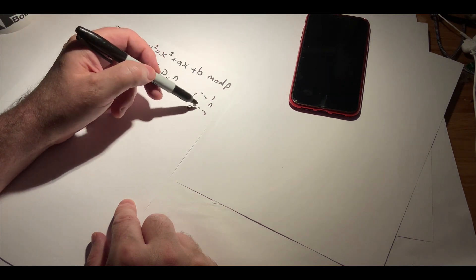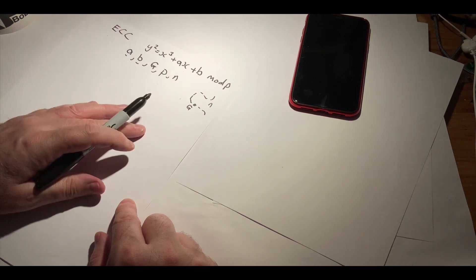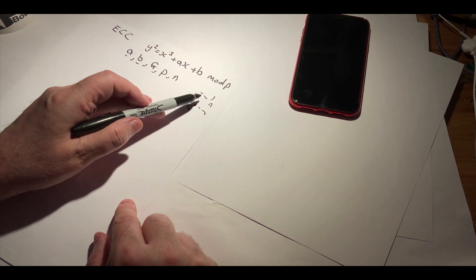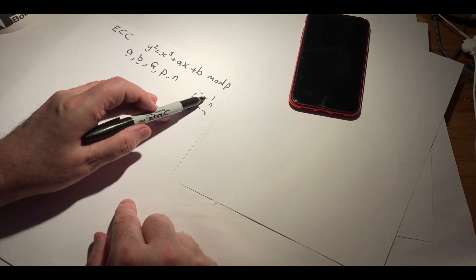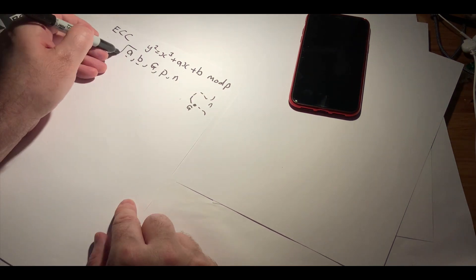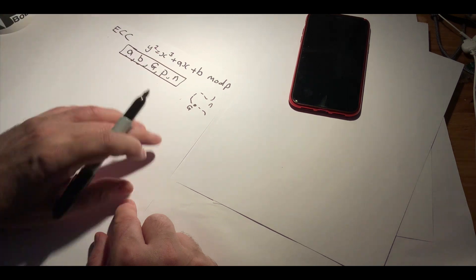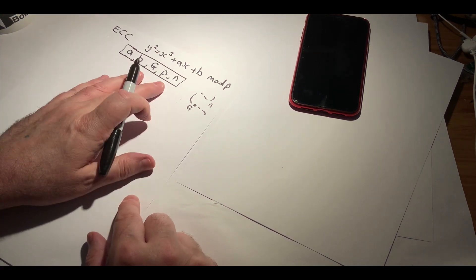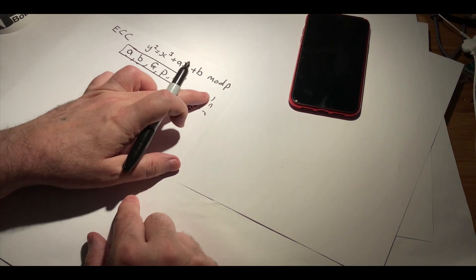And that's the total number of points that we can have on our elliptic curve from this form here. So all together, these give us our elliptic curve parameters.